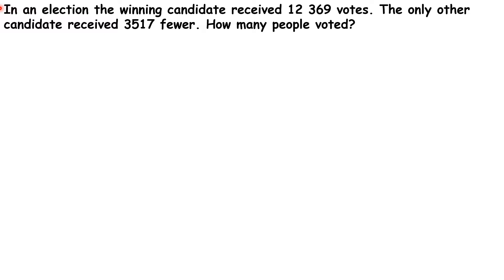In an election, the winning candidate received 12,396 votes. The only other candidate received 3,517 fewer. How many people voted?